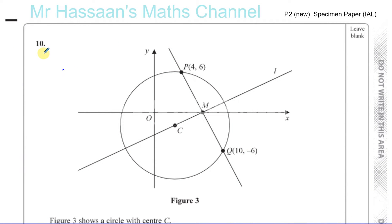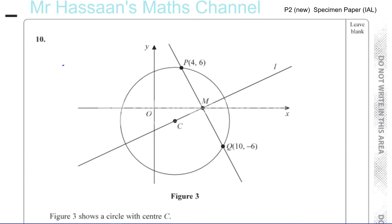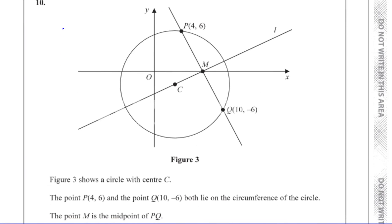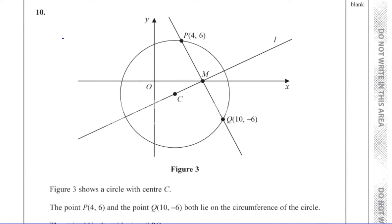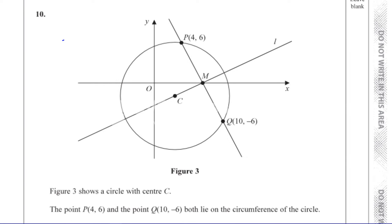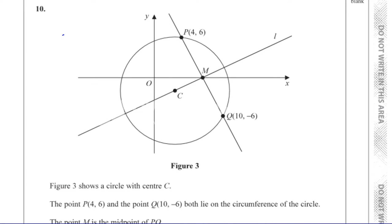Question number 10 from the specimen paper for the International A-Level P2. We have a question about circles, where figure 3 shows a circle with centre C. The point P at (4, 6) and the point Q at (10, -6) both lie on the circumference of this circle.